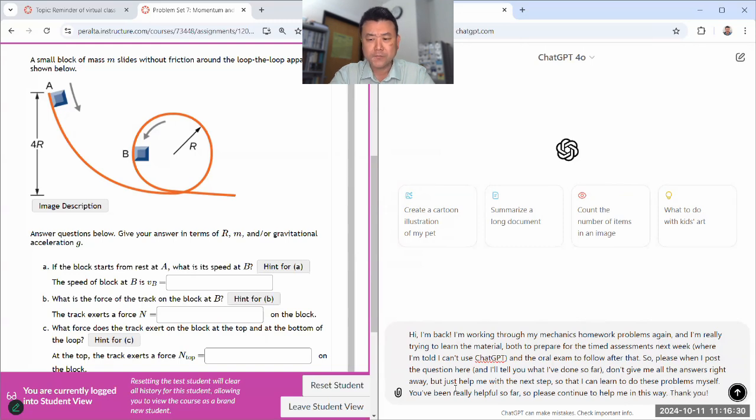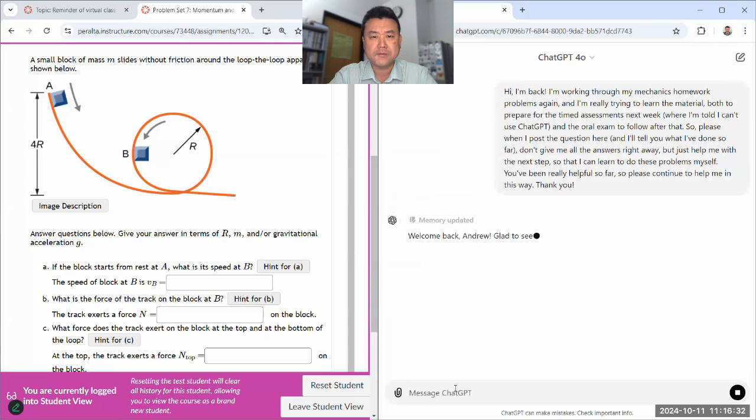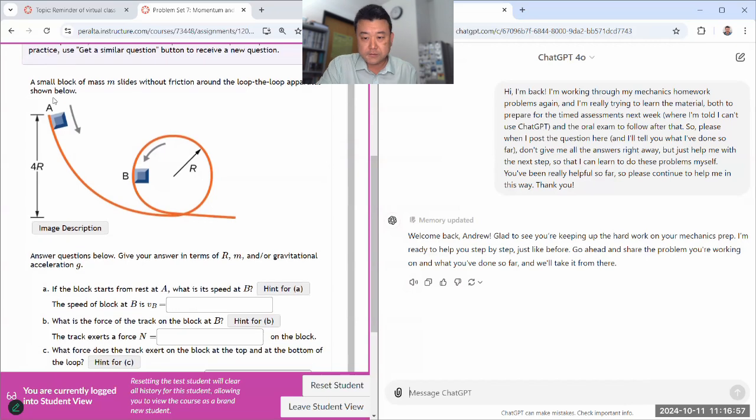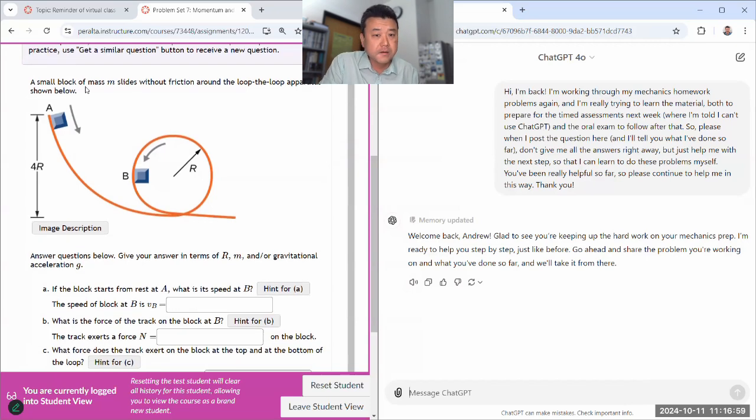I've been told that if you flatter ChatGPT, it behaves better. So that's why I've included the last two sentences. Otherwise, my inclination is to be mean to something that's not even sentient. But I'm told that if you flatter it, it works better. So I'll thank my toaster if that makes the toaster work better.